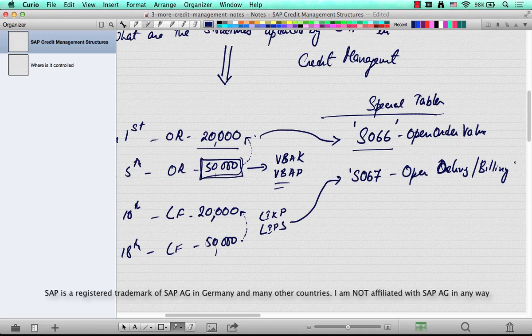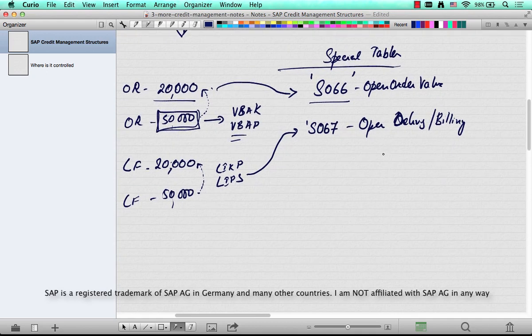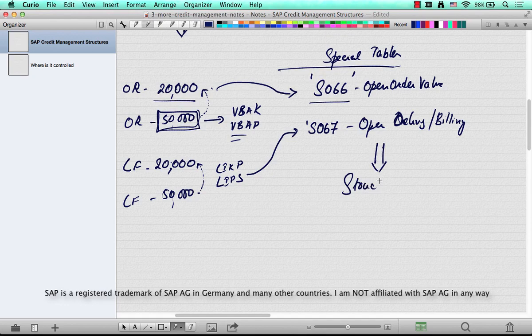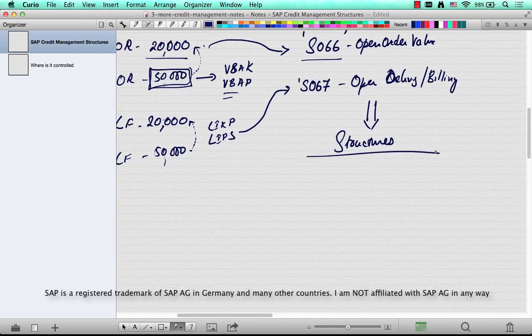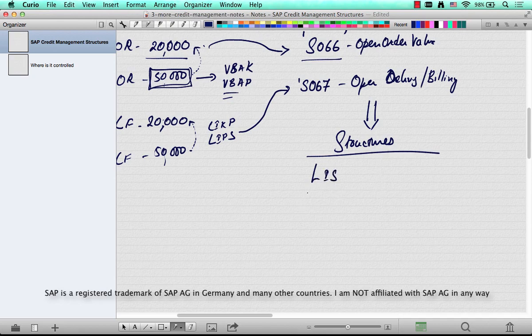These tables are sometimes also called structures because they are not typical transactional tables. They are more or less like accumulation tables, and traditionally they are called structures. And the type of structures that we typically talk about are LIS structures, which stands for logistics informational system.